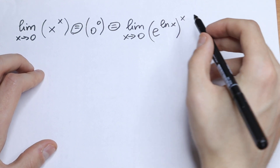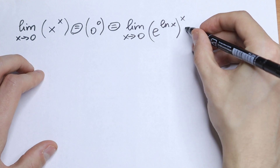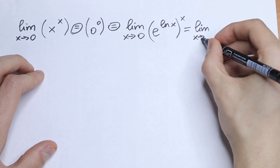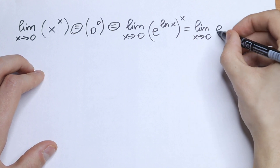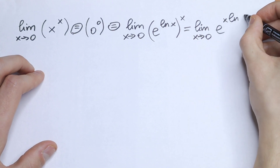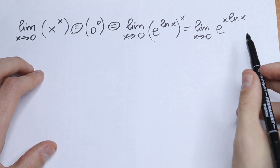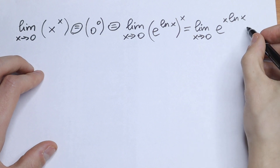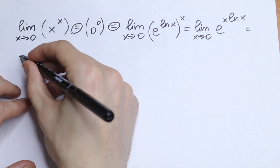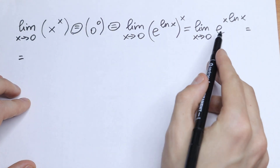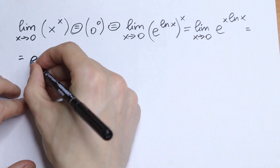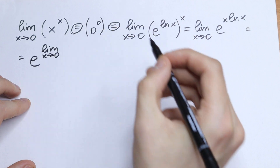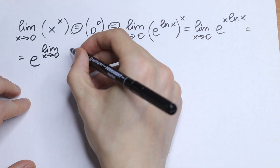We know that this x needs to multiply with natural log x. So as a result, this limit will be equal to the limit as x approaches 0 of e to the power x times natural log x. Since e is a constant, we can find the limit of our exponent, so we write this as e to the power of the limit as x approaches 0 of x natural log x.